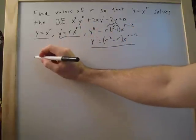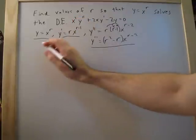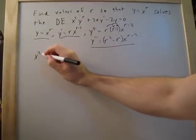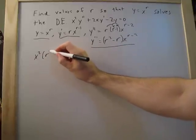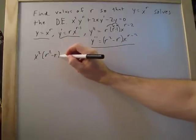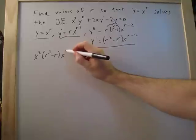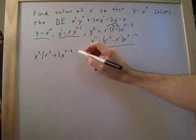So we'll go ahead. So x squared y double prime is going to be x squared, and here's the y double prime equation. And so that's going to be r squared minus r times x to the r minus 2.